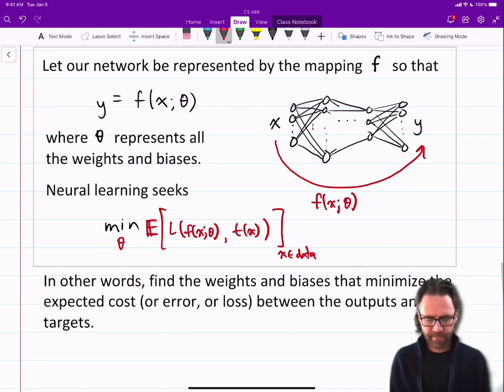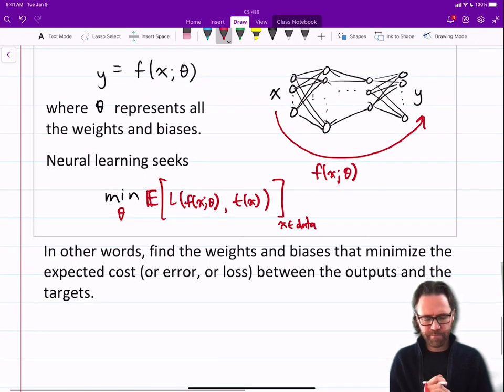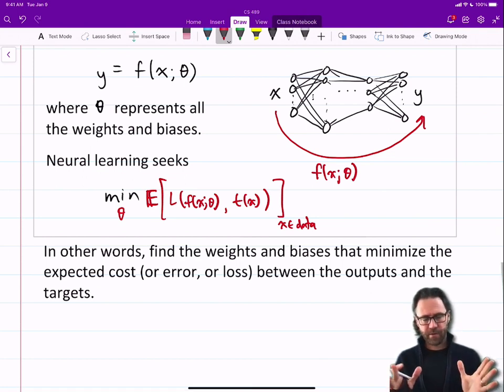In other words, find the weights and biases that minimize the expected cost or loss or error between the outputs and the targets.